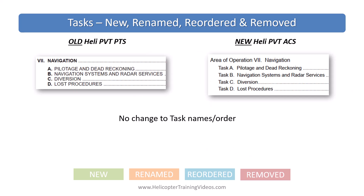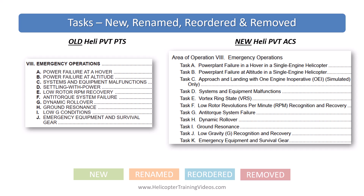There are no changes to any of the task titles or order under navigation. Under emergency operations, there is clarity of single-engine helicopters for the power plant failures in tasks A and B. They added an approach and landing with one engine inoperative (simulated) for multi-engine aircraft, which got inserted as task C, pushing all other tasks down one letter. This likely won't be used often since very few people with a twin helicopter would be doing their private pilot check ride.